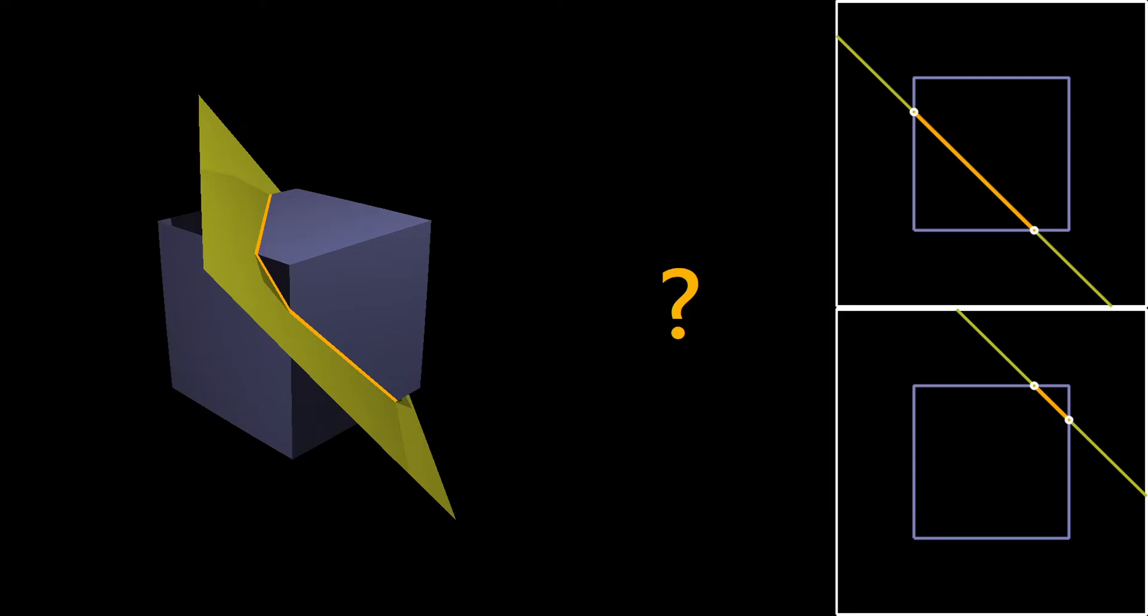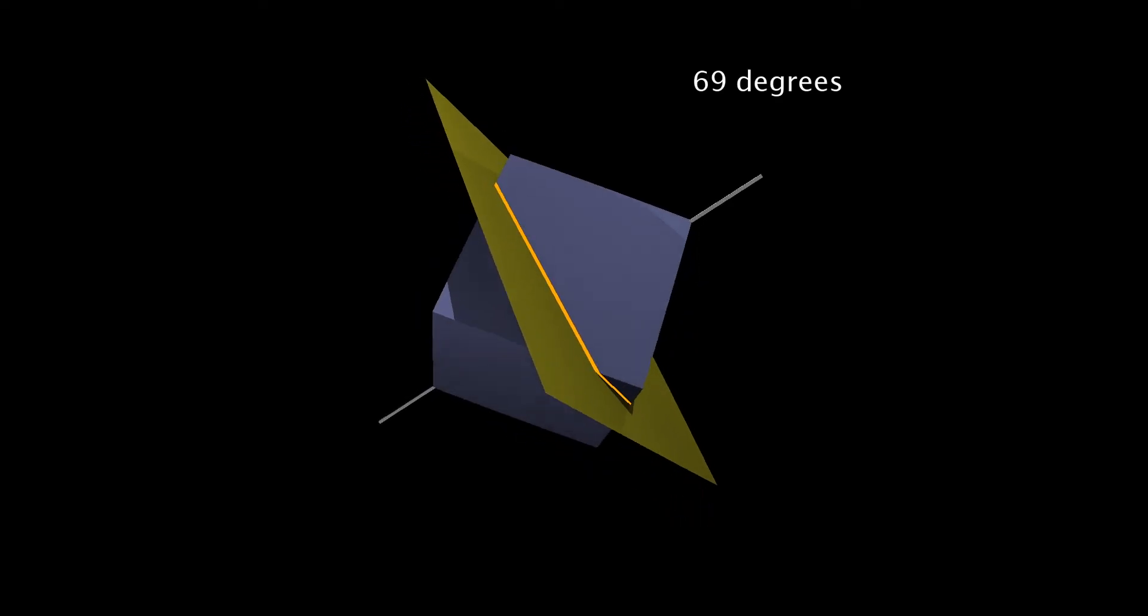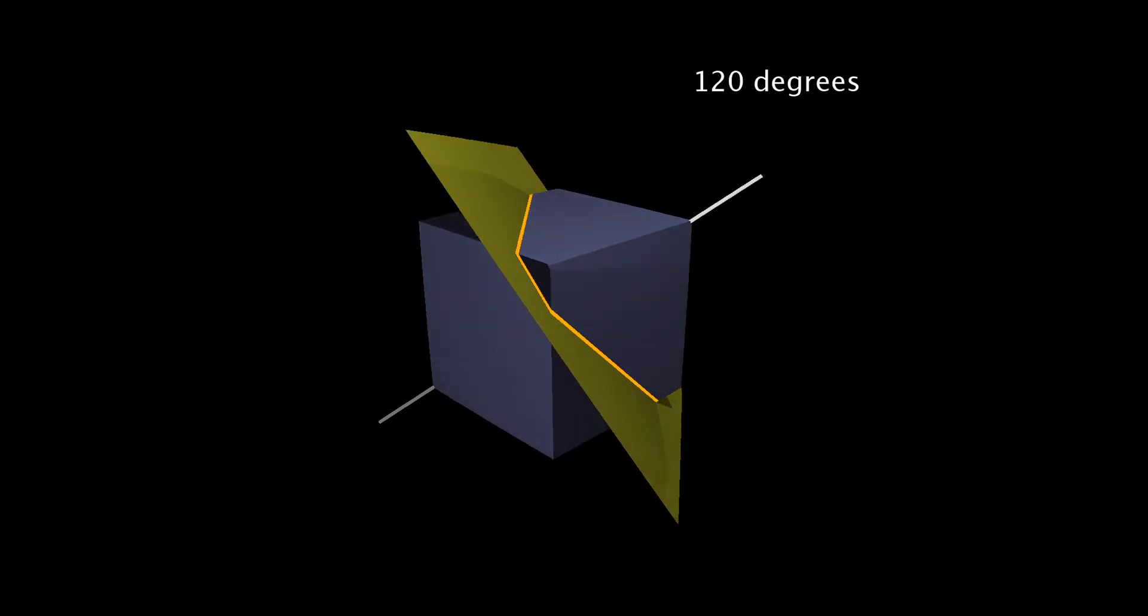So the first piece of extra information that we're going to use is that whatever the diagonal cross-section of the cube is, it needs to have triangular symmetry. Now why is that? Well, the easiest way to see it is to notice that if we rotate the cube about this axis as shown here, every time we rotate by a multiple of 120 degrees, we get back to where we started.